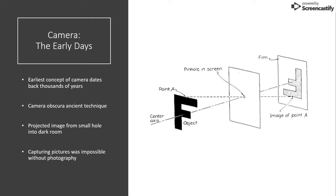As strange as it may seem, the first notion of a camera predates the invention of the photograph. The camera obscura was an ancient optical technique that could project an image or scene through a small hole into an adjoining room, where the image was displayed on the wall of that dark room.